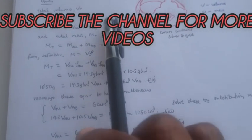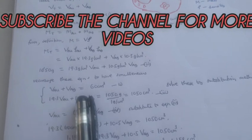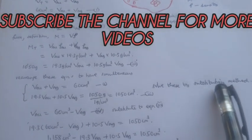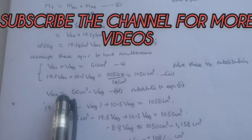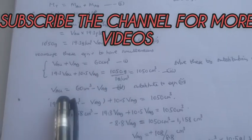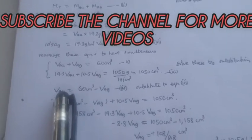We have simultaneous equations and we solve it by substitution method. We rearrange the first equation by making volume of gold the subject.